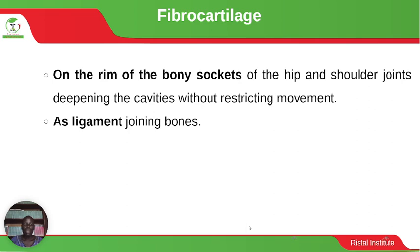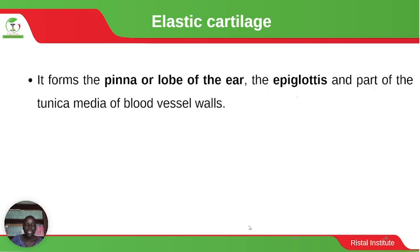Fibrocartilage is found on the rim of the bone sockets of the hip and shoulder joints, deepening the cavities without restricting movement. That is why at the shoulder joint you can move your hand 360 degrees without restriction. It can also be found as ligaments joining bones.